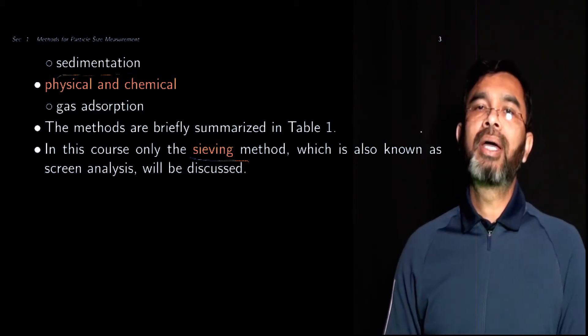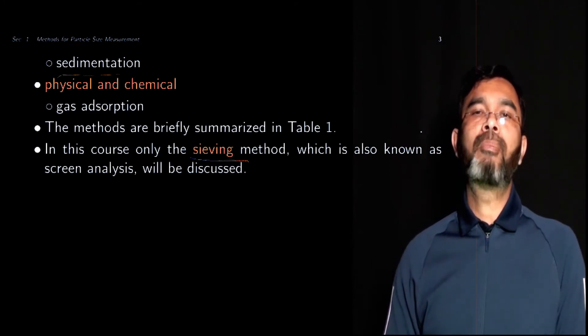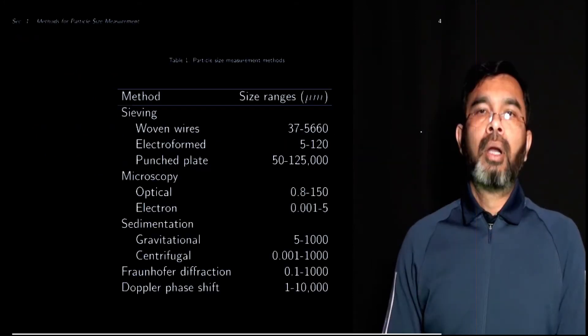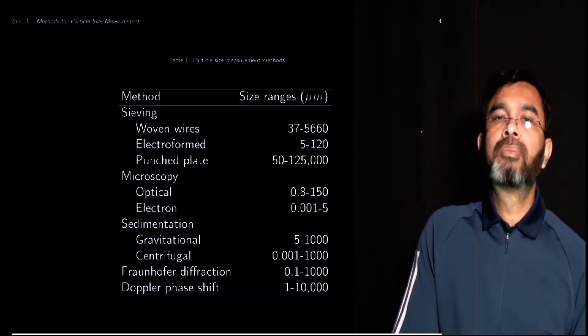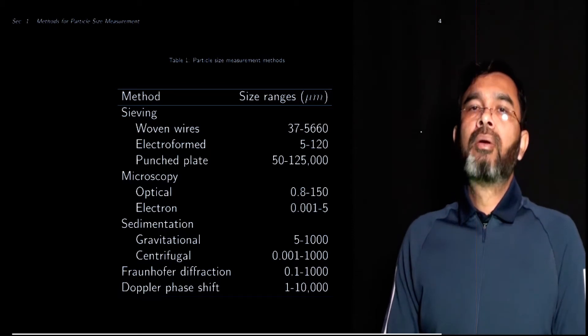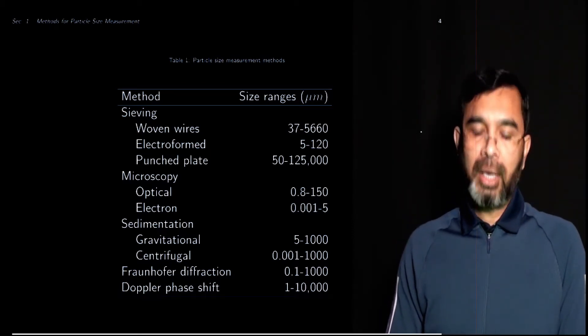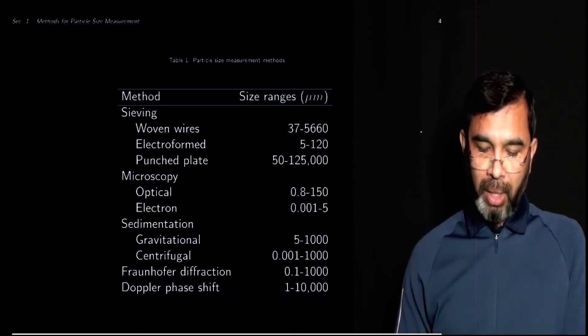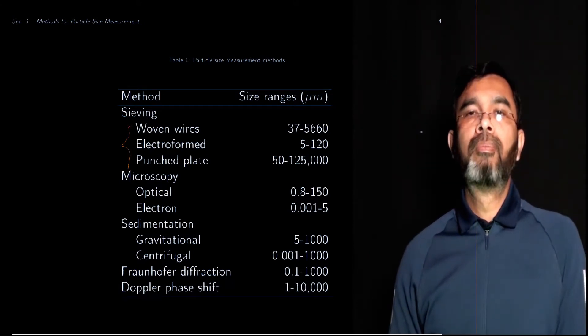This is one of the mechanical methods to measure the size of bulk particles. This table shows different methods and the ranges of particles for which these particular methods are applicable. For sieving we can use different types of screens.